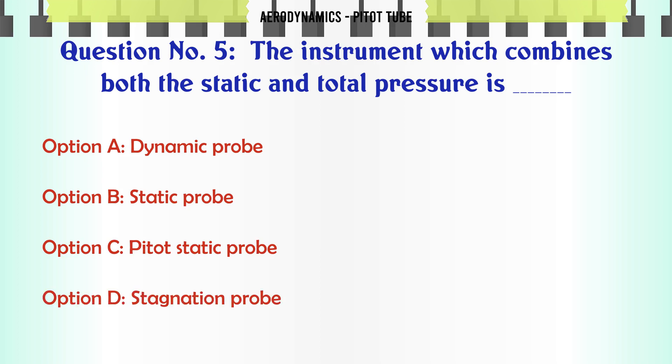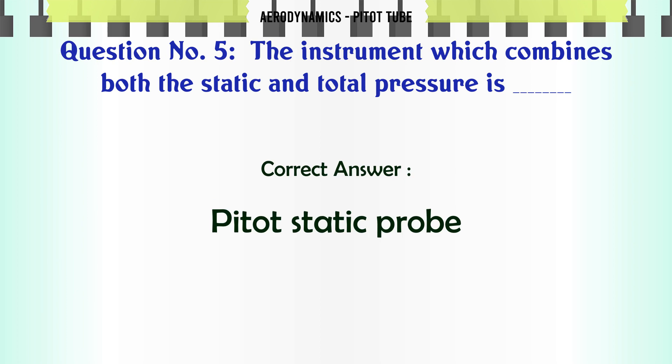The instrument which combines both the static and total pressure is: A. Dynamic probe, B. Static probe, C. Pitot static probe, D. Stagnation probe. The correct answer is Pitot static probe.